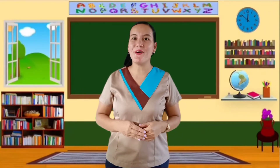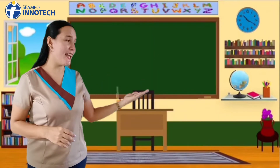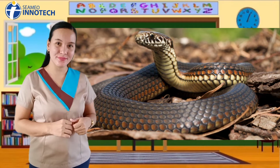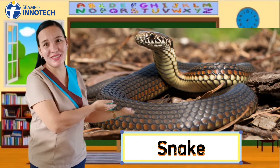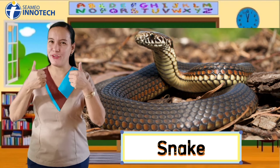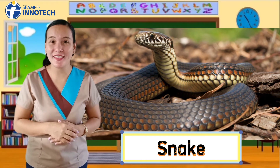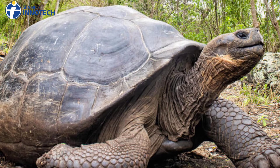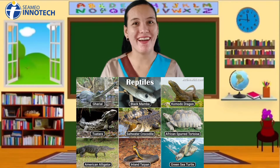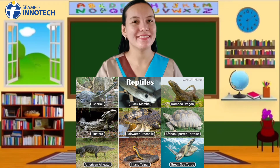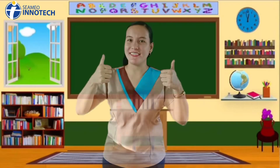Next on the list are reptiles. What animal is this? Yes, this is a snake. Can you describe the body covering of the snake? Very good. It has dry, scaly skin. Some reptiles have hard shells on their body, just like the turtle. Based on these pictures, where do you think reptiles live? Yes, reptiles live in both land and water.